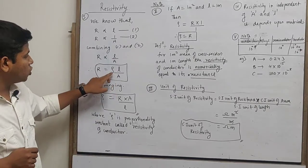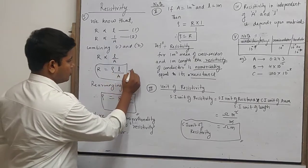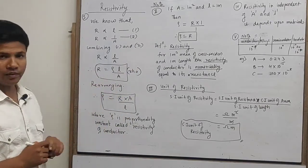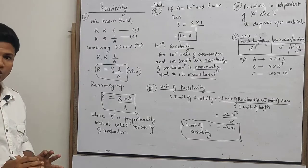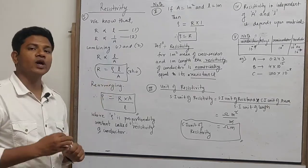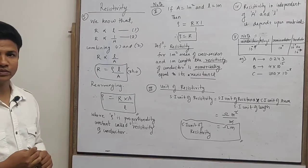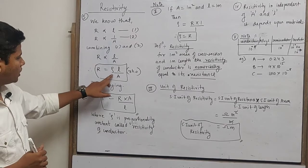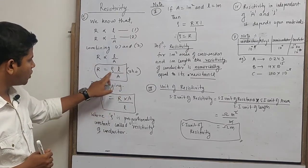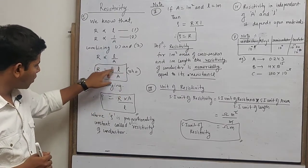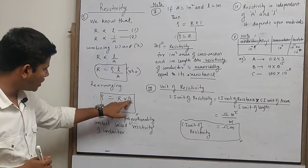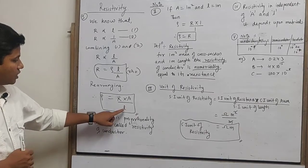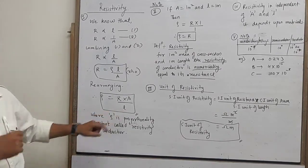To convert proportionality to equality, we introduce a constant. R is equal to rho L over A. This constant is rho. R is the resistance, L is the length of the conductor, A is the area of cross section.